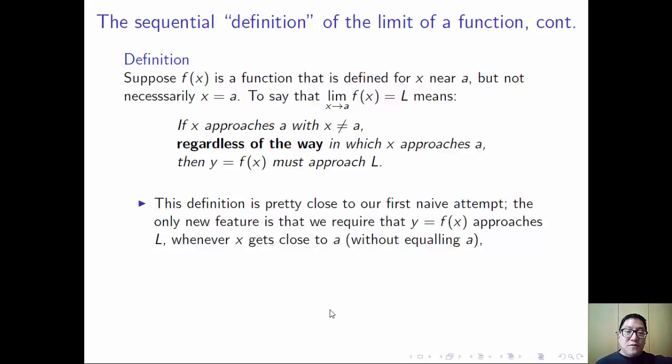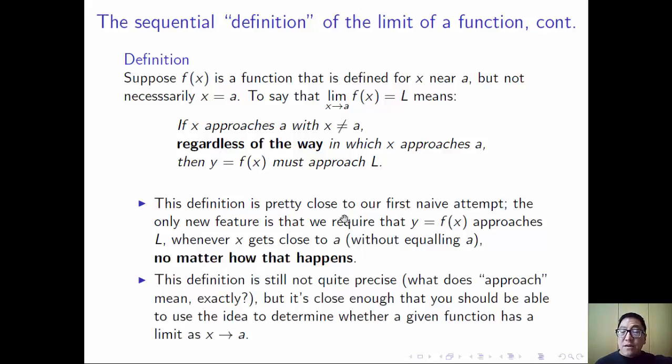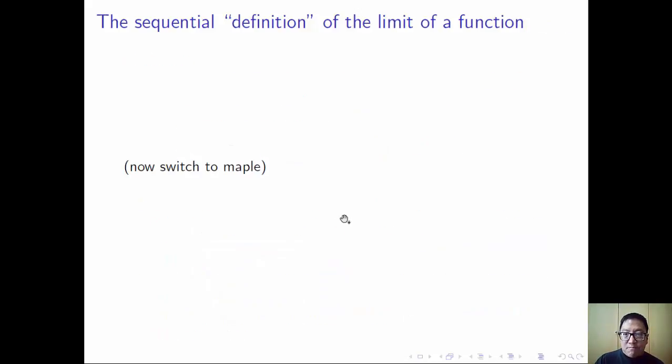So one point is that this definition is very close to our first sort of naive attempt, and the only new feature is this second line that we have to, that y has to approach l no matter how x approaches a. This actually, as it turns out, this definition is still not quite precise enough for proofs, which is in the end what you want the definition of the limit to be, but it's sort of close enough that you should be able to use this idea to figure out, in practice, whether a given function has a limit as x approaches a.